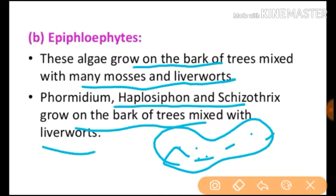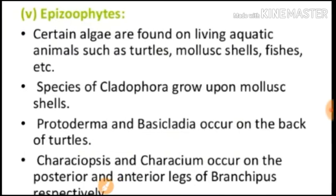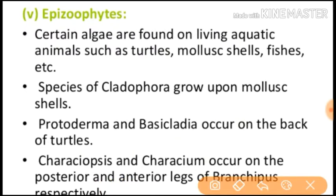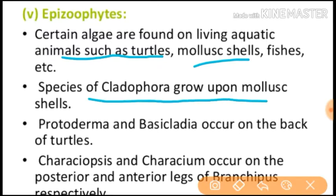The second type, epiphytophytes, are algae that grow on the bark of trees mixed with mosses and liverworts. Certain algae are also found on living aquatic animals such as turtles, mollusk shells, and fishes. For example, species of Cladophora grow upon mollusk shells.